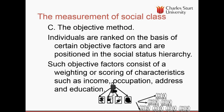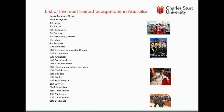Another way is the objective measure, where we assign people a score based on a weighting of characteristics such as income, occupation, and address. If you're going to use one individual measure for social class, occupation is usually used — because occupation not only determines income, but also your reputation to a certain extent. A Reader's Digest list of the most trusted occupations in Australia shows ambulance drivers at the top, while marketers are somewhere near the bottom, though still ahead of politicians — who have power but are not ranked highly on this social class structure.